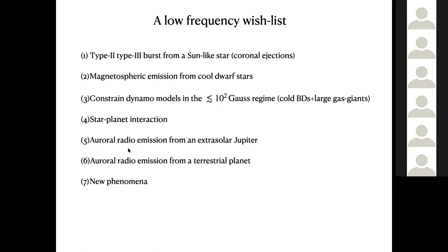The remaining wish-list items involve direct detection of auroral emission from a Jupiter-like planet in an extrasolar setting — massively revolutionary, meaning we could directly detect planets by pointing radio telescopes. The long-term goal is detecting an Earth-like planet from its auroral radio emission, but that requires going to space, since an Earth-like field of ~1 gauss means observing at 1–few MHz. And of course, there's always the possibility of entirely new phenomena, since all of this is based on solar system benchmarks.